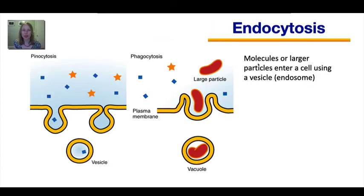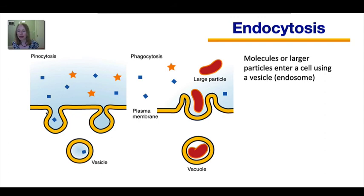Endocytosis occurs when molecules or even larger particles enter a cell using a vesicle, sometimes referred to as an endosome. Pinocytosis — sometimes called cellular drinking — is when the plasma membrane folds inward and then pinches off to form a vesicle containing a small amount of fluid that was initially found outside the cell, along with dissolved molecules inside that fluid.